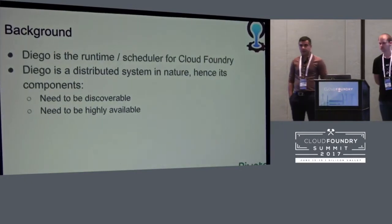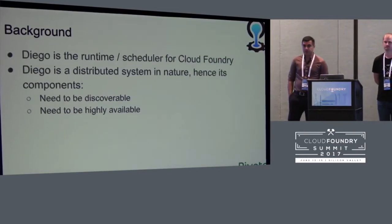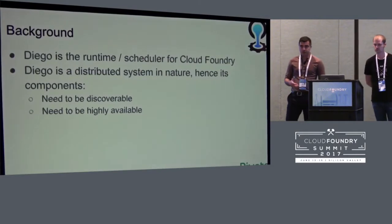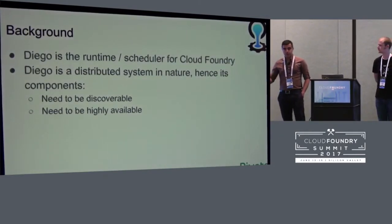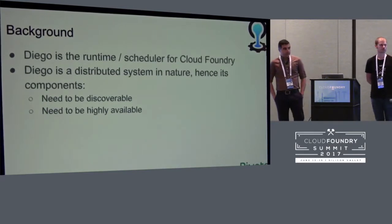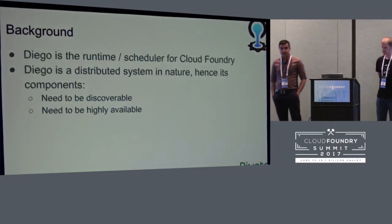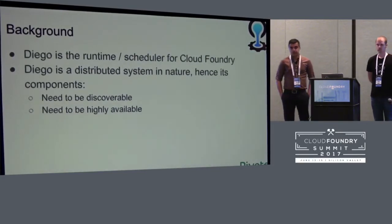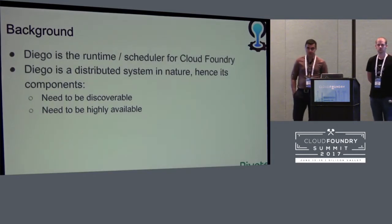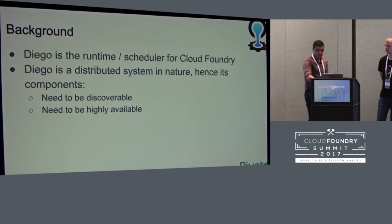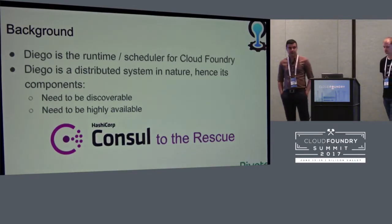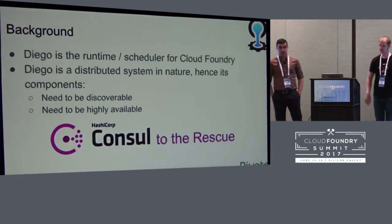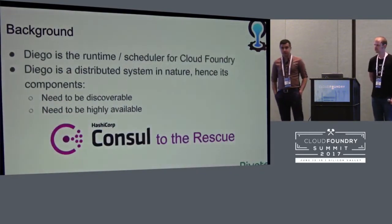Diego is the runtime and the scheduler for Cloud Foundry. The role of Diego is to receive jobs from Cloud Controller and then run, monitor, and make sure those jobs are running. The important point about Diego is that it's a distributed system in nature, which means its components need to be discoverable and highly available. In Cloud Foundry, to provide that discoverability and high availability, we decided to use Consul, mostly because Consul has features that allow for discoverability and high availability.